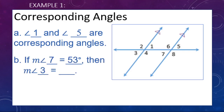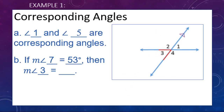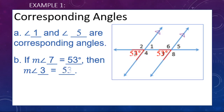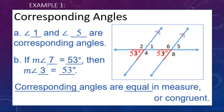Another example: if we know the measure of angle seven is 53 degrees, what's the measure of angle three? There's angle seven at 53 degrees, and angle three matches up with it — so angle three is also 53 degrees. Corresponding angles are equal in measure, or congruent. Congruent refers to the shape being the same; equal in measure refers to the actual number value.